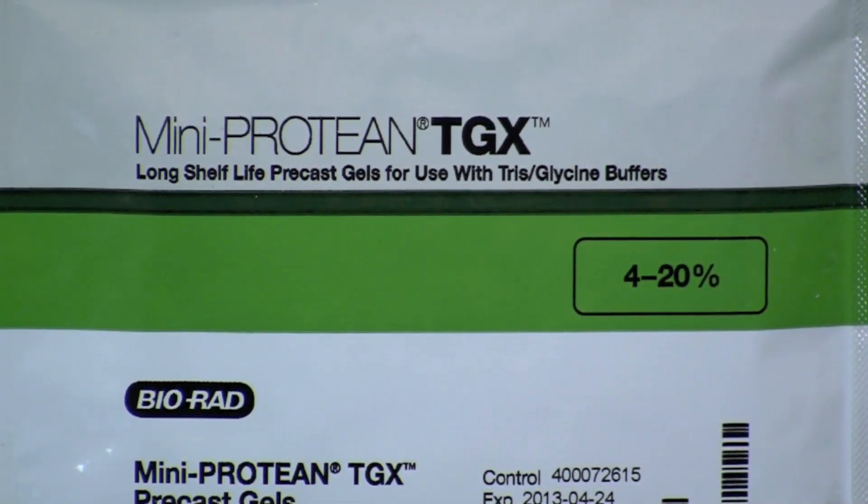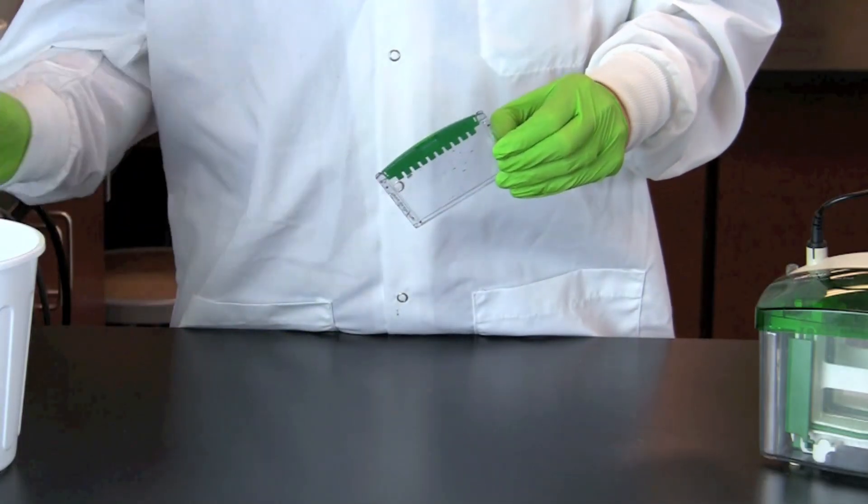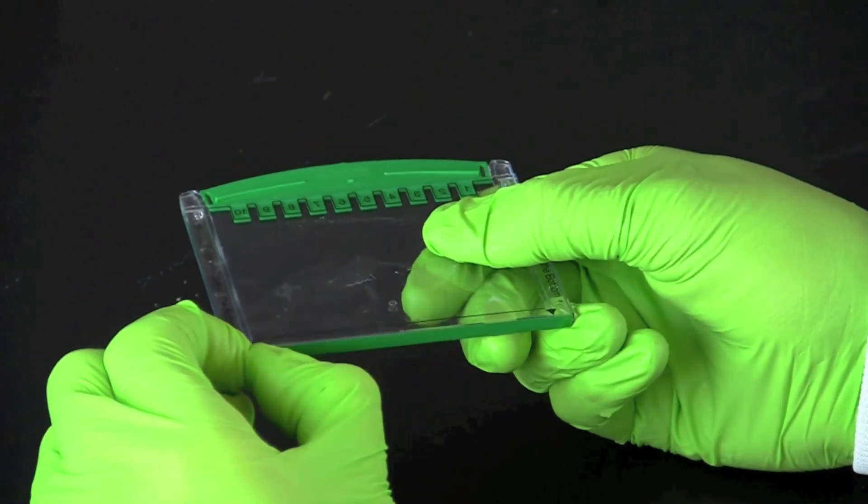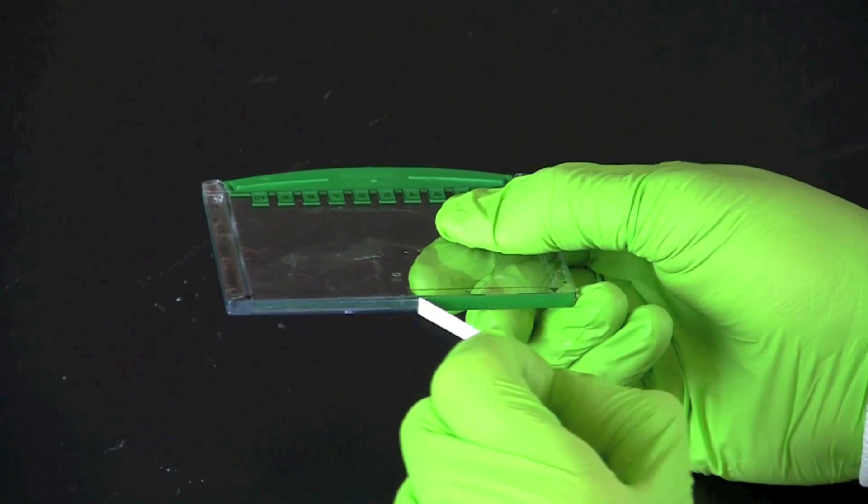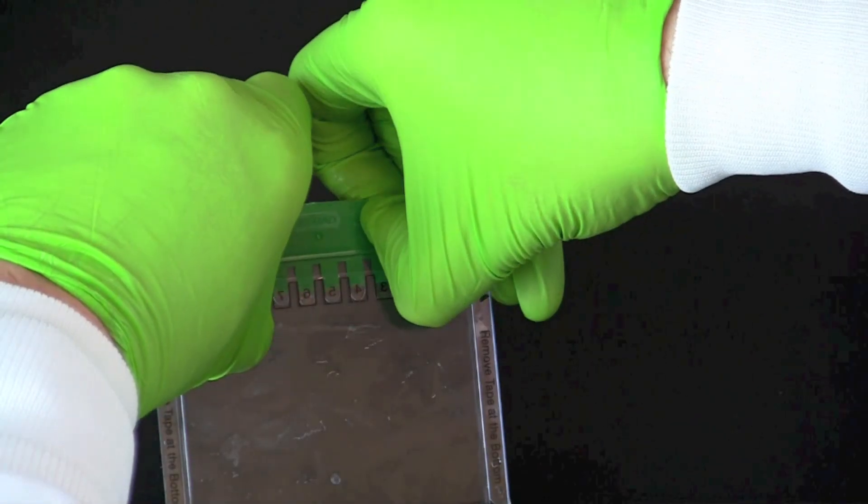Prepare the Mini Protein TGX gel by removing it from its package, pulling the tape off of the bottom of the gel, and removing the comb.